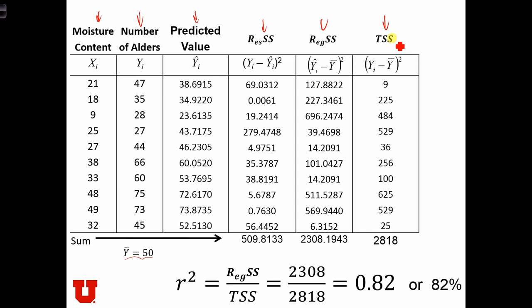And then the total sum of squares is just yi minus y bar squared, so it's 47 minus 50 squared, which gives us 9. We're going to do that for each of our observations and sum up these columns to get our different sums of squares.